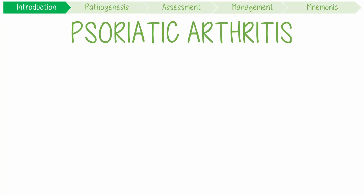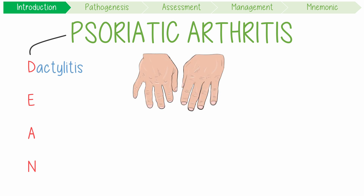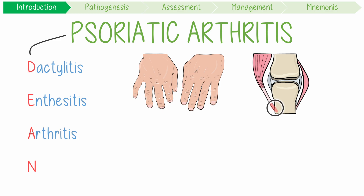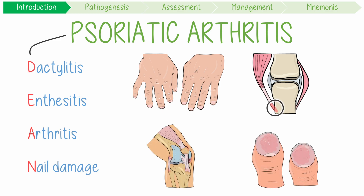Psoriatic arthritis is the dean of rheumatic diseases, presenting with features like dactylitis, enthesitis, arthritis, and nail damage.